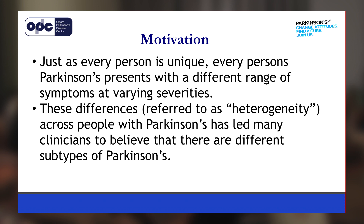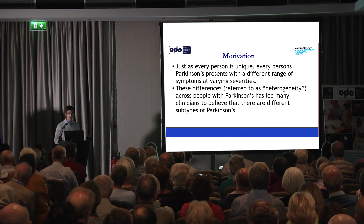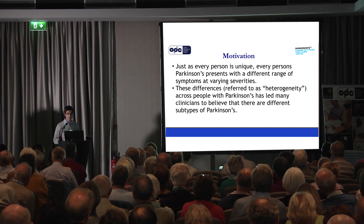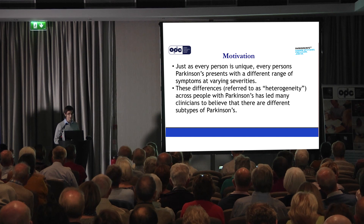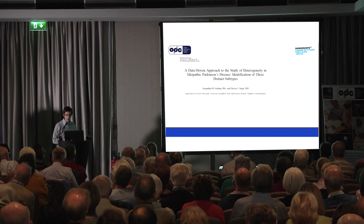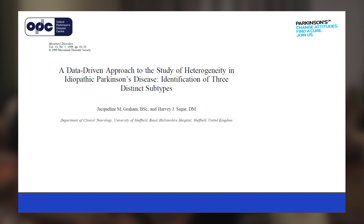Just as every person is unique, every person with Parkinson's presents with a different range of symptoms at varying severities. And these differences — as a statistician I would refer to this as heterogeneity across people with Parkinson's — has led many clinicians to believe that there are different subtypes of the disease. The first paper that looked at this was back in 1999 and was written by Graham.